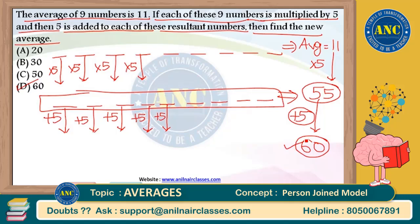In our previous class we took one question on increase and another on multiplication. This question is a combination of both increase and multiplication. The key point is very clear — new average is 60.